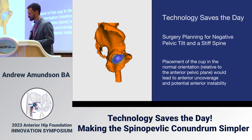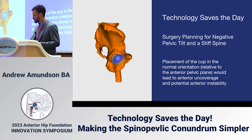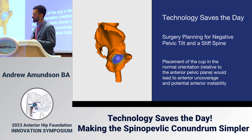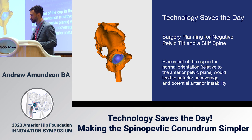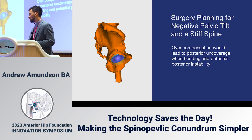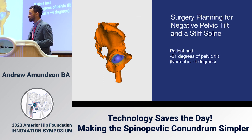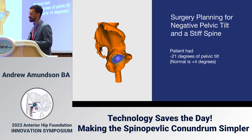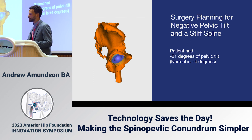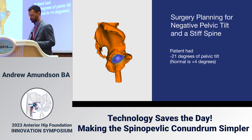How can technology help this patient? Surgery planning for negative pelvic tilt and stiff spine: with negative pelvic tilt, instead of planning for normal anteversion, we can decrease the anteversion to compensate. Using the Hip Inside algorithm, which corrects for the patient's pelvic tilt — this patient has minus 21 degrees of pelvic tilt where normal is 4 degrees — that's 25 degrees of difference. We take a third of that difference and adjust our anteversion targets accordingly.